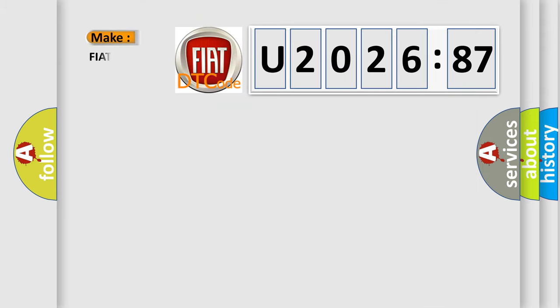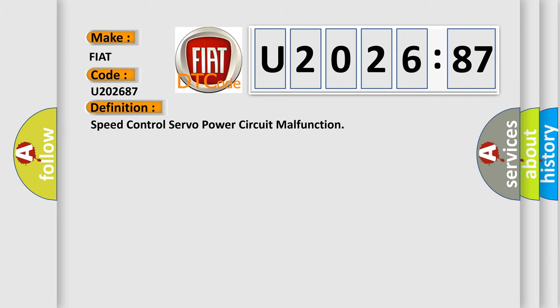So, what does the diagnostic trouble code U202687 interpret specifically for FIAT car manufacturers? The basic definition is: Speed control servo power circuit malfunction.